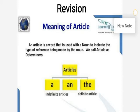There are two types of articles: indefinite articles and definite articles. Indefinite articles are something which is not specific. Definite articles are something which is specific.